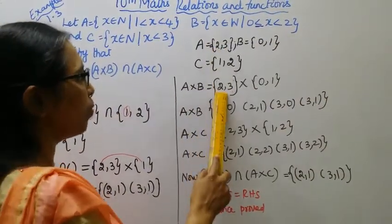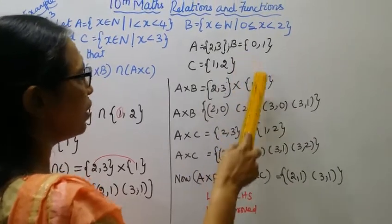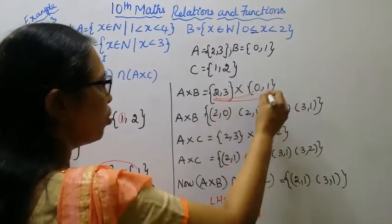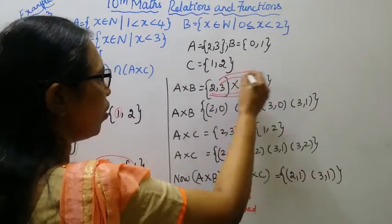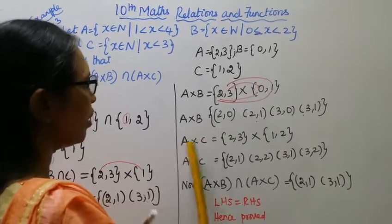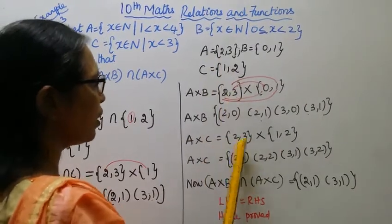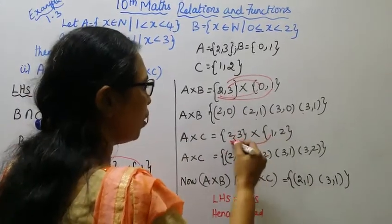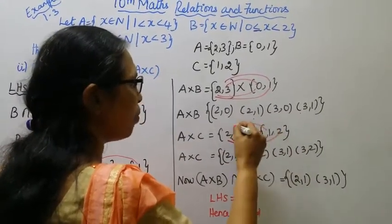A cross B: {2, 3} cross {0, 1} gives {(2,0), (2,1), (3,0), (3,1)}. A cross C: {2, 3} cross {1, 2} gives {(2,1), (2,2), (3,1), (3,2)}.